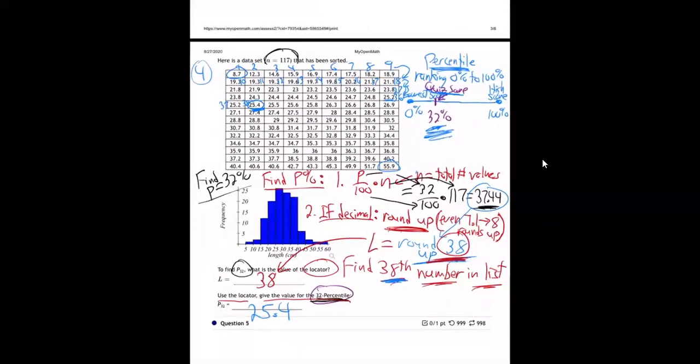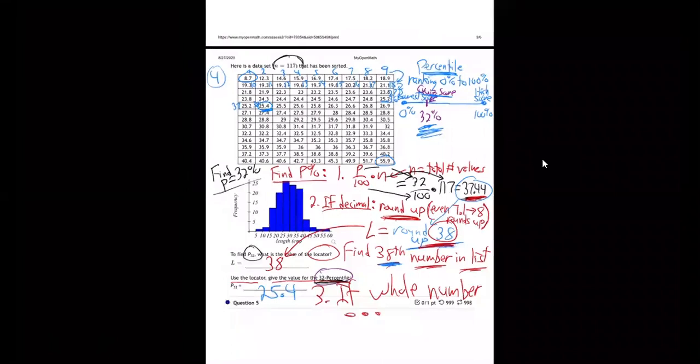That's how you figure out percentile. Now, there's another step here if you don't get this one. If it's a whole number, if it's a whole number, you see when I did this calculation right here and I got 37.44, it might have come out a whole number. There's something else you do, which I'll show you on another problem. But on this one, you're going to get a decimal. So if you get a decimal, round up, that's the locator. So we rounded up to 38. That's the locator. And then go find the 38th value, which in our case, my case, my example was 25.4.